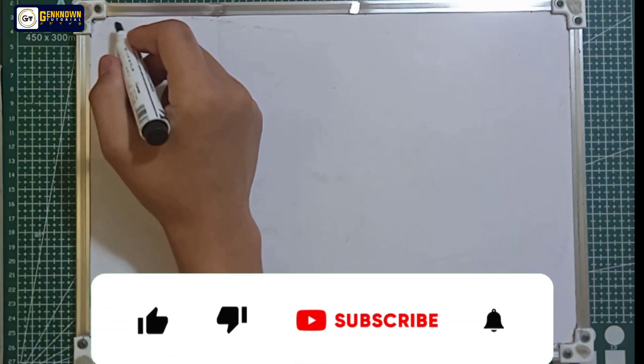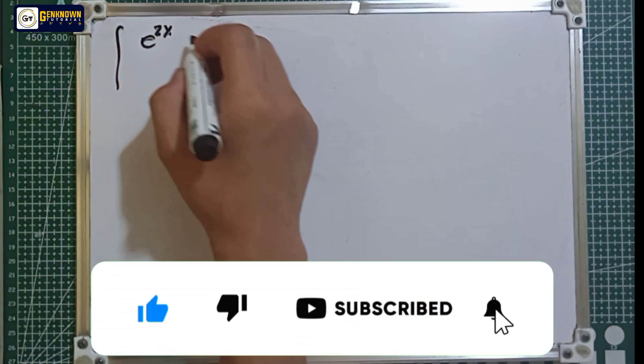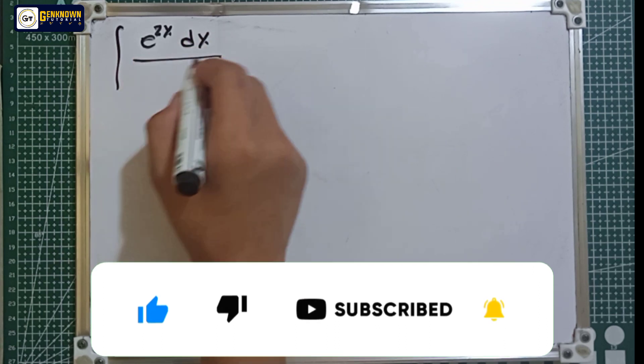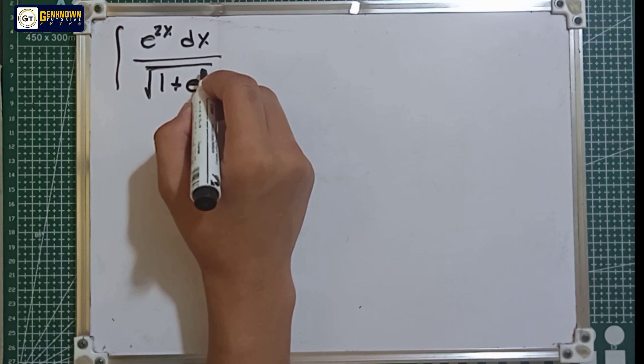Number 10, we have the integral of e raised to negative 2x dx all over by the square root of 1 plus e raised to 2x.